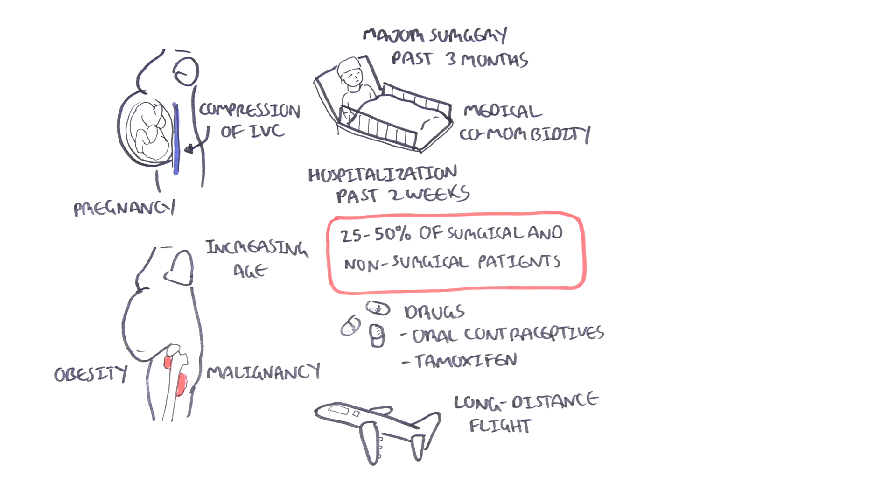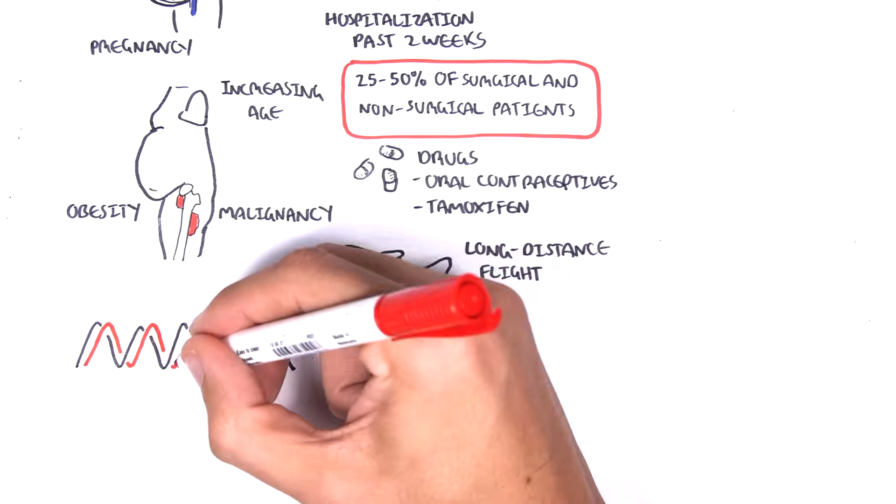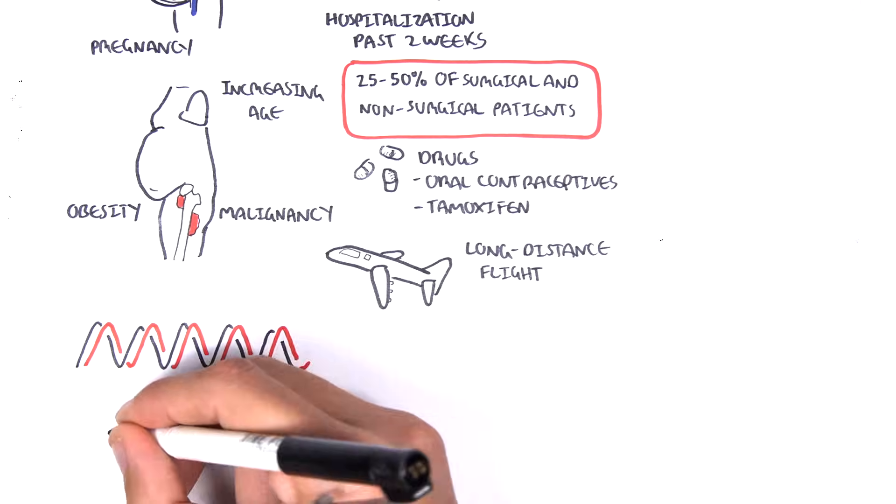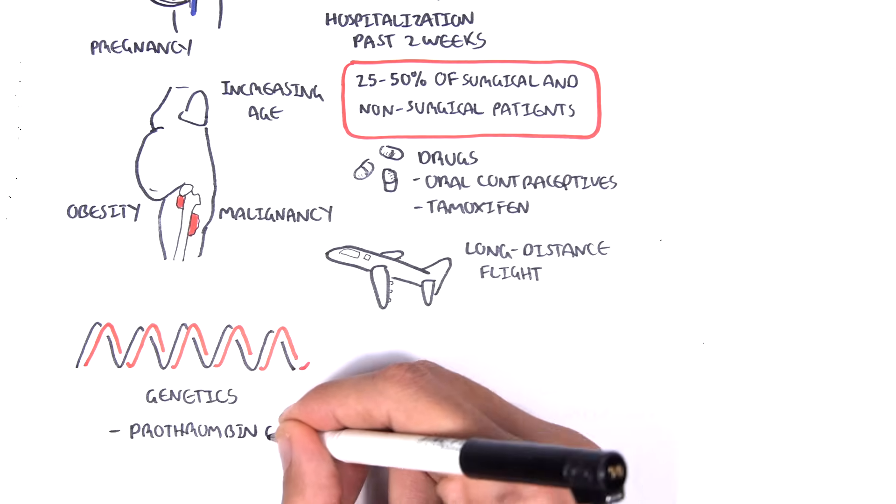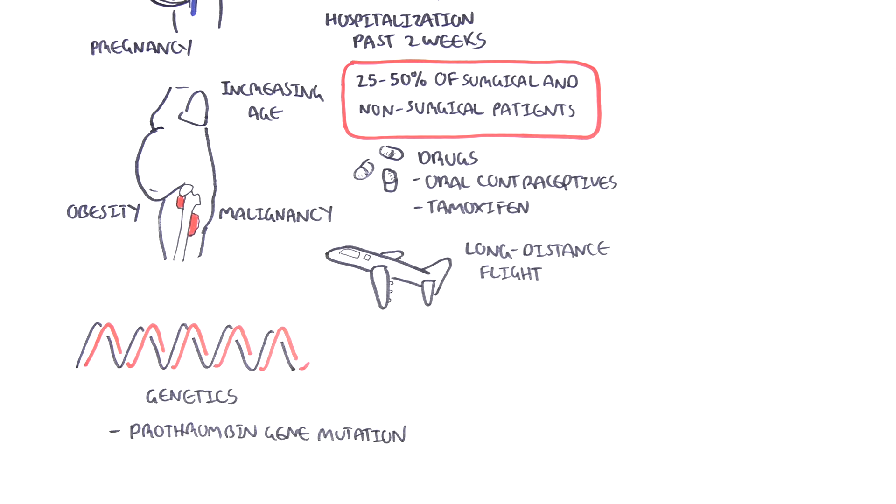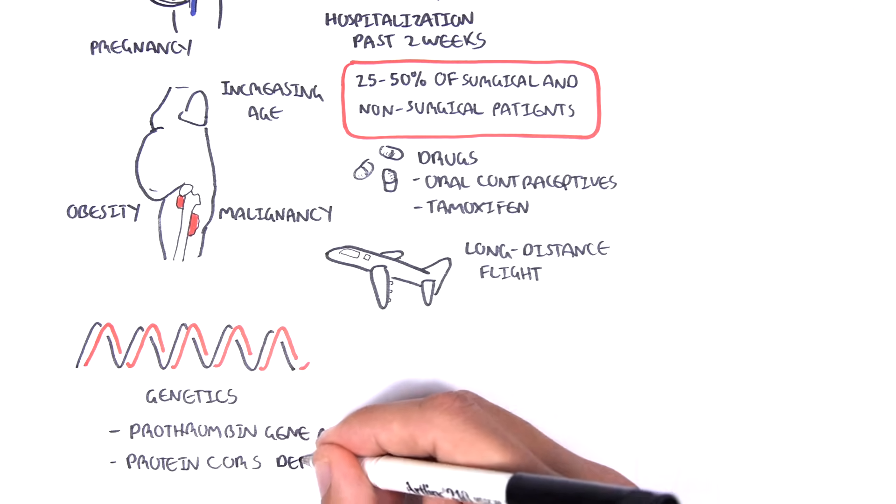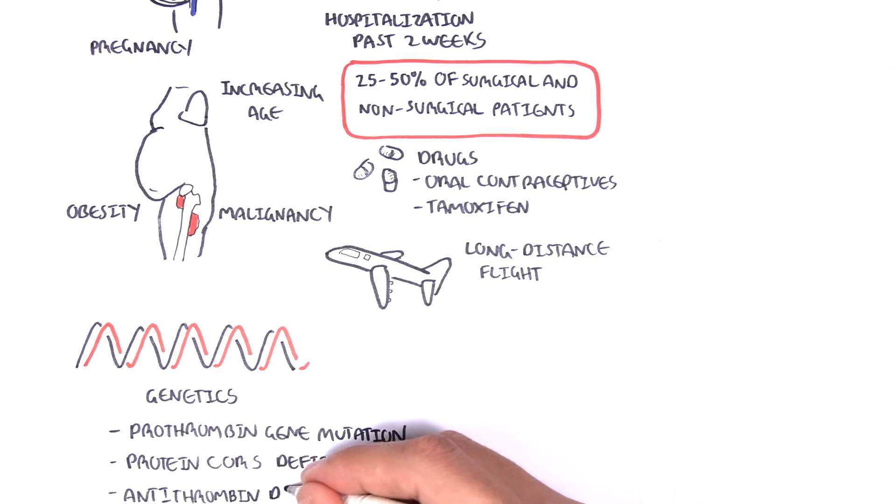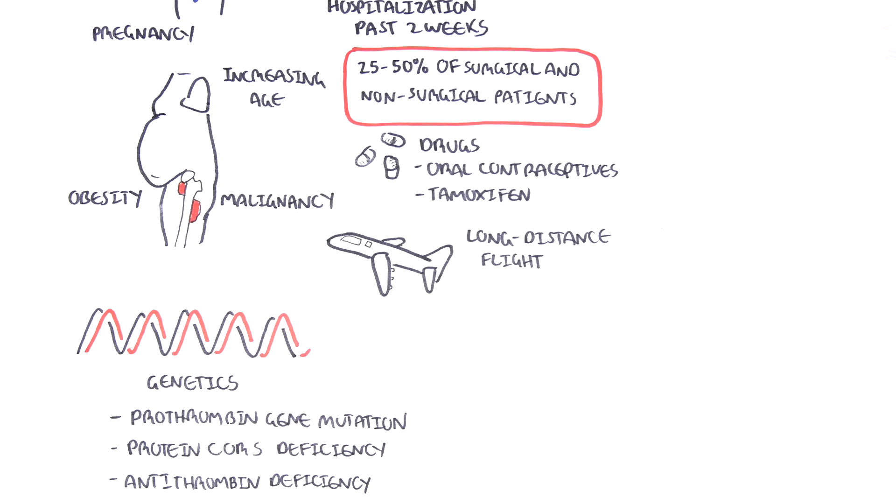Genetics also plays a role in increasing the risk of DVT. Genetics including antithrombin G mutation, protein C and S deficiency and also antithrombin deficiency.